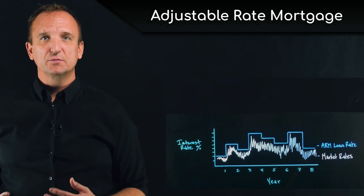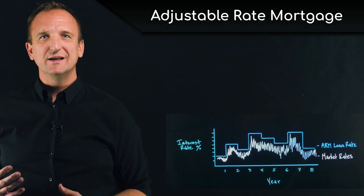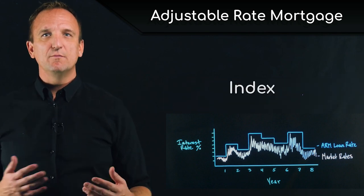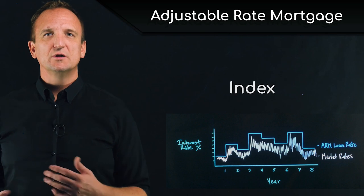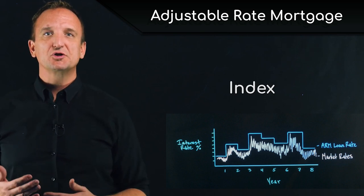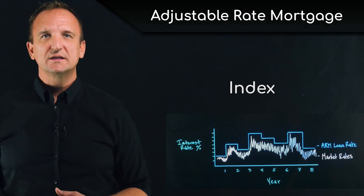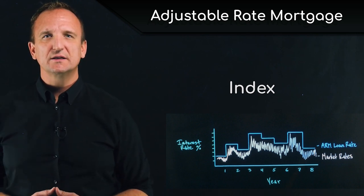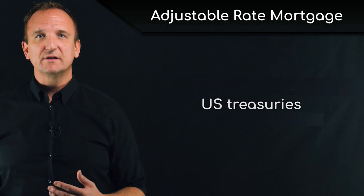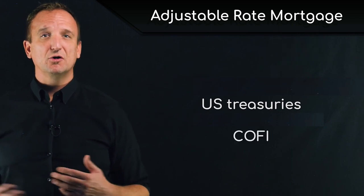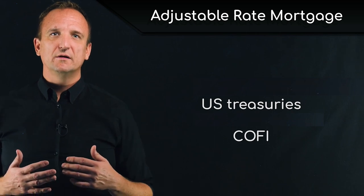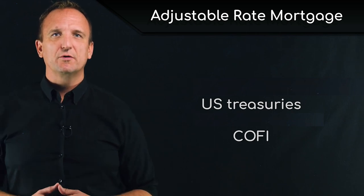Interest rates in adjustable loans are typically tied to an index. The index is the indicator of the market interest rates to which the loan is tied, and is what is used to help set the rate at each adjustment period. Common indices for adjustable rate loans in the United States are treasury bills or the 11th district cost of funds, sometimes called COFI. The index is the basis for the interest rate at each adjustment period.